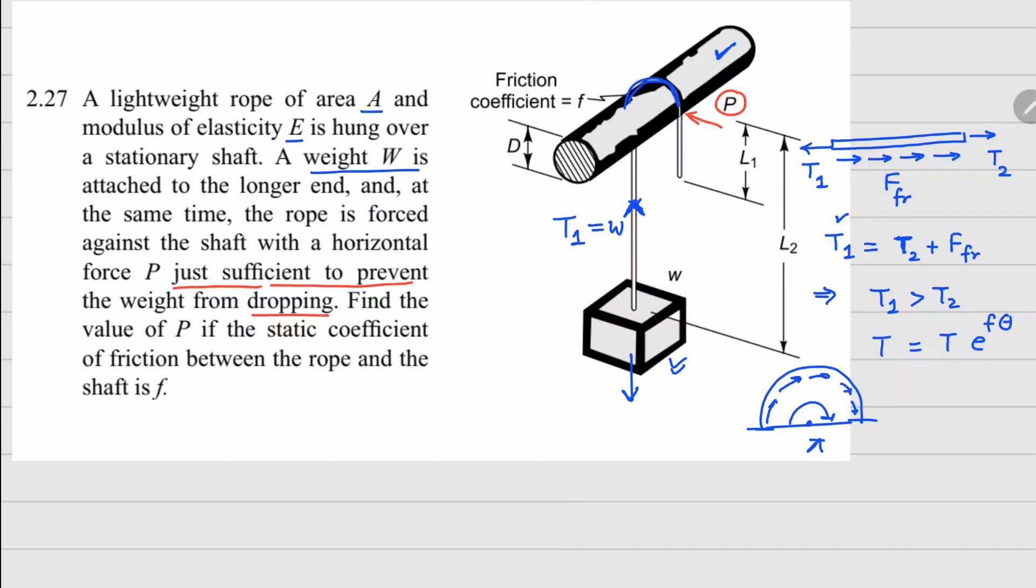I have purposefully not written the value of T₁ and T₂ here. This e to the power f theta is going to be a number that is more than one. From this relationship we are expecting T₁ to be more than T₂, so this has to be T₁ and this has to be T₂.